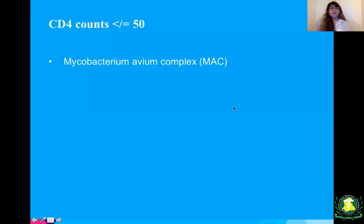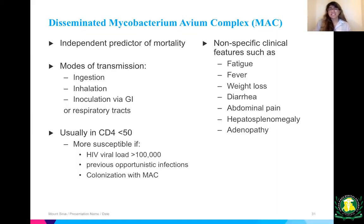At CD4 counts less than or equal to 50, the biggest thing to think about is MAC — Mycobacterium avium complex. Disseminated MAC is an independent predictor of mortality. Modes of transmission include ingestion, inhalation, and inoculation via the GI and respiratory tract. Risk factors include viral load greater than 100,000, history of previous opportunistic infections, and being colonized with MAC. Clinical manifestations are nonspecific: fatigue, fever, weight loss, diarrhea, abdominal pain, hepatosplenomegaly, and adenopathy.